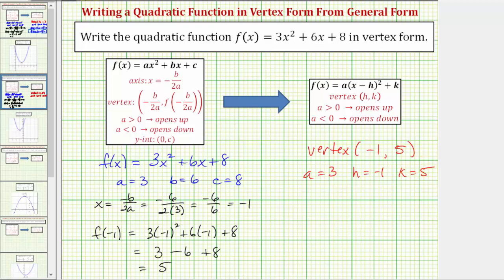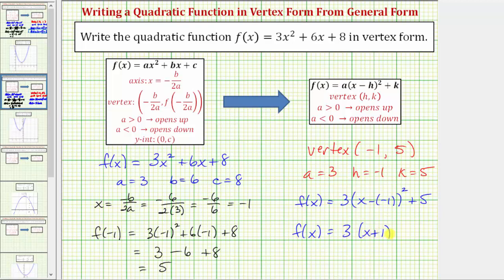Therefore the quadratic function in vertex form would be f of x equals three times the quantity x minus h squared, that would be x minus negative one squared, plus k, so we'd have plus five. Of course subtracting a negative is the same as adding a positive, so let's write this as f of x equals three times the quantity x plus one squared plus five. This is the quadratic function in vertex form.